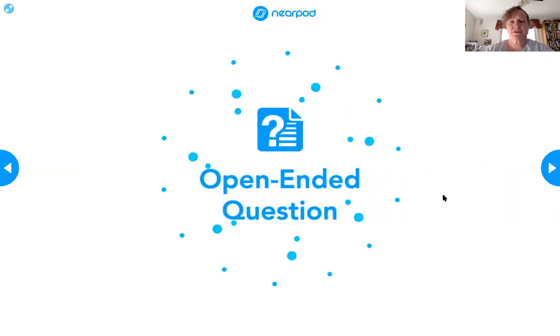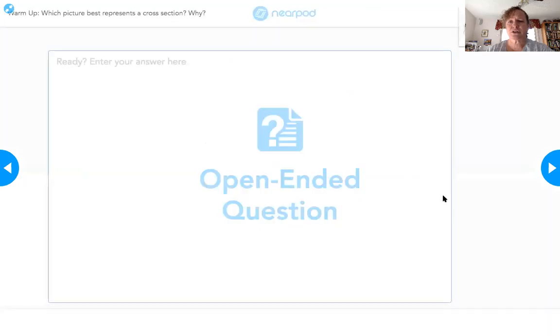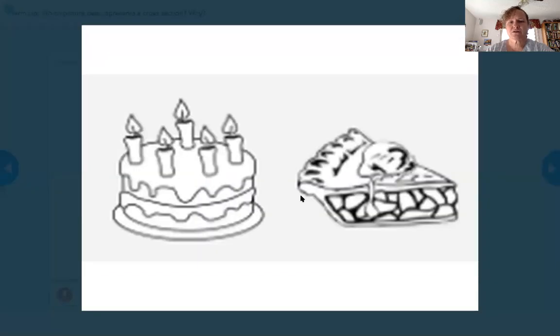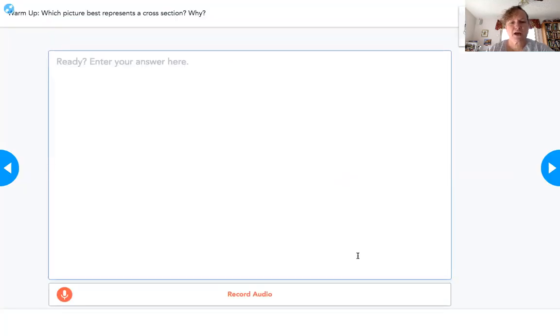So I'm going to give you a few moments to answer these next two questions on your own just as a review. So which picture best represents a cross section and why? So here are the two pictures. So one of a full cake and one of a pie that's cut. So which one shows us the cross section the best and why?